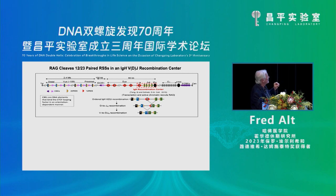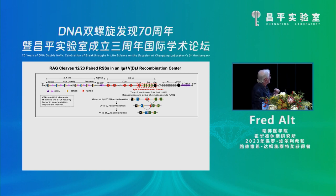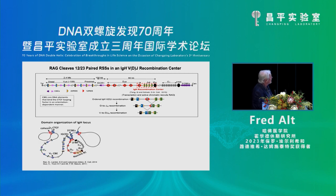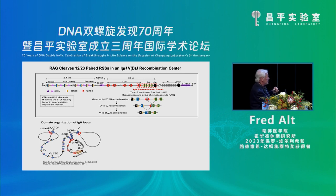There are elements in this locus called CTCF binding elements. One end is flanked with them. There's one element in the middle called IGCR1 that has two CTCF binding elements pointing in different directions — discovered in my lab by Chung Wang Wu. There are also many CTCF binding elements in the variable region locus all pointing downstream. CTCF binding elements bind the CTCF looping factor in an orientation-dependent manner. IGCR1's CBEs interact with other CBEs to sequester the DJ part of the locus in a loop, with the Js, Ds, and recombination center all together, ready to go.